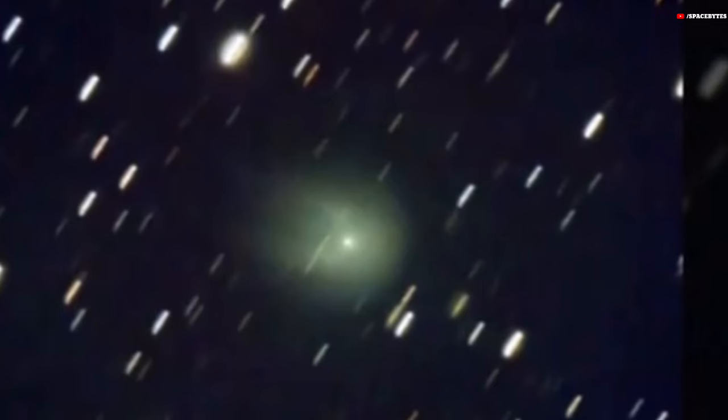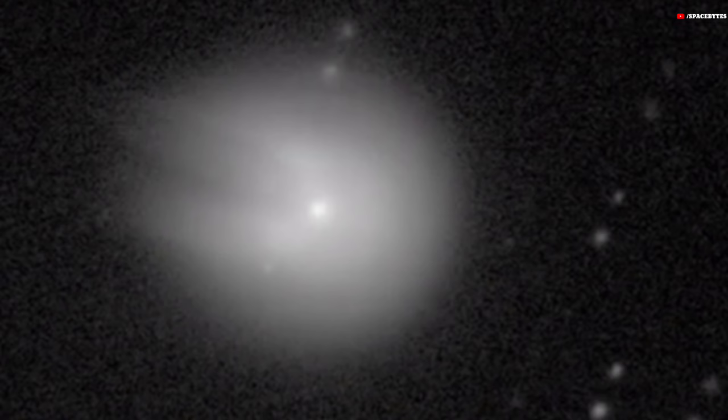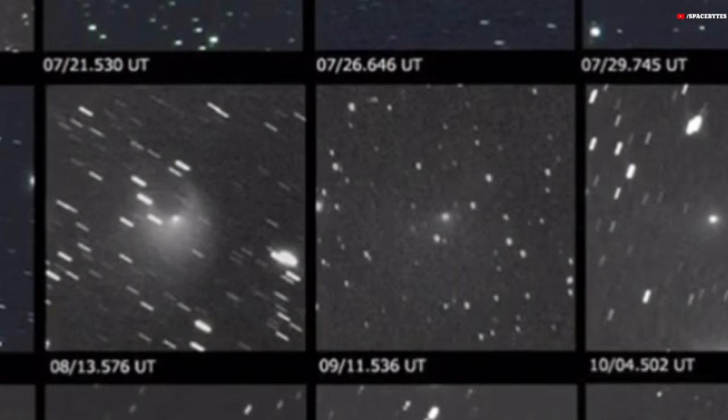The British Astronomical Association, which has been closely monitoring 12P, detected the explosion after noticing that it appeared dozens of times brighter due to the light reflected by its coma, which is the cloud gas surrounding its center.